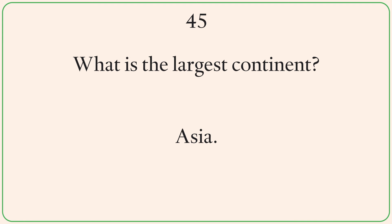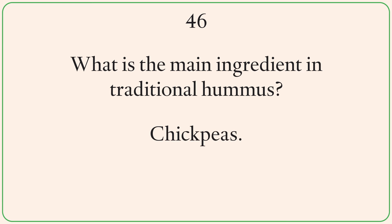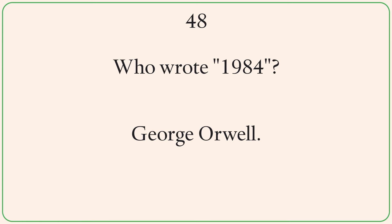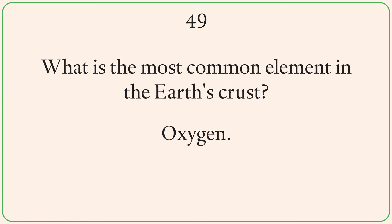What is the largest continent? Asia. What is the main ingredient in traditional hummus? Chickpeas. What is the currency of Japan? Yen. What is the most common element in the Earth's crust? Oxygen.